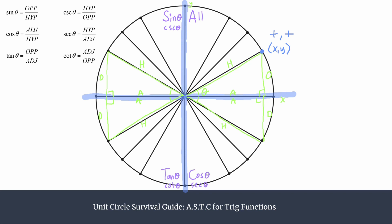In the quadrant two triangle, working from the origin, you have to move left and up to get to your point. So we have negative x and positive y. That means the adjacent side is going to be negative, so any trig ratio that includes the adjacent side will be negative. Thus the only positive functions are sine and its reciprocal cosecant, which use opposite over hypotenuse — no adjacent side. That's why we use S in quadrant two.